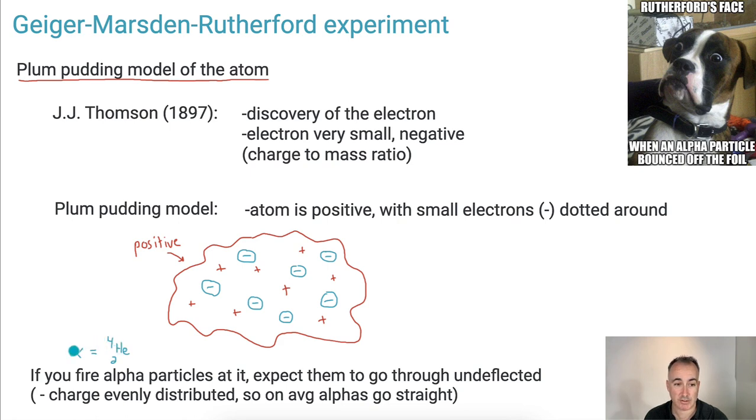They expected then, they knew that alphas were positive. So they expected if they sent these positive particles through, on average, if these are all equally dispersed, then these particles should go right through. Because yes, they're attracted a little bit left, but they're attracted a little bit right. They fully expected alpha particles to go right through. That's because the charge is evenly distributed. So on average, they go straight.